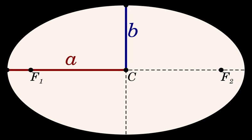The semi-major axis of a hyperbola is, depending on the convention, plus or minus one-half of the distance between the two branches. Thus it is the distance from the center to either vertex of the hyperbola.